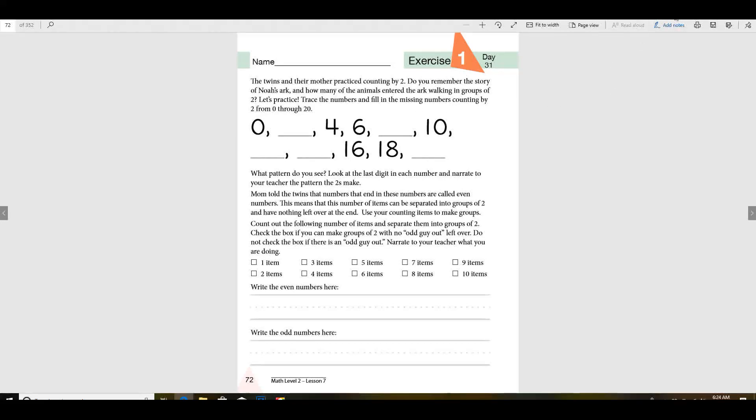All right, so we're going to be talking about even and odd numbers. Let's go ahead and get our pencil out. We're going to be practicing with even numbers, skip counting by two. Last week, or the week before Thanksgiving we were doing fives and tens. Well, the twins and their mother practice counting by two. Do you remember the story of Noah's ark and how many of the animals entered the ark walking in groups of two? We're going to practice. Now we're going to trace the numbers and we're going to fill in the missing numbers counting by two from zero through twenty.